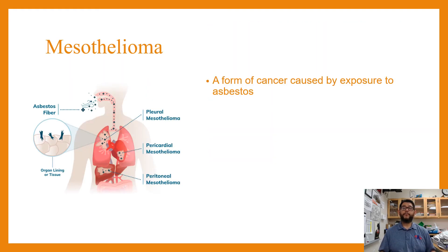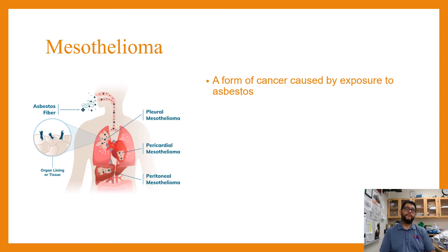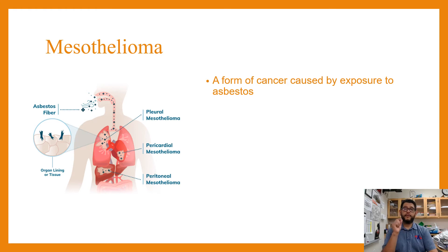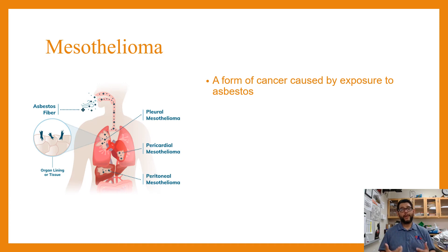Another example that's pretty common is something called mesothelioma. This is where you're exposed to asbestos, which is a flame retardant insulation material that can end up releasing tiny amounts of asbestos fibers into the air, and that can lead to cancer in the lungs.